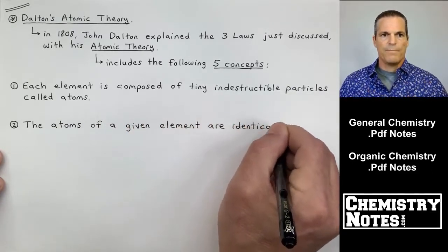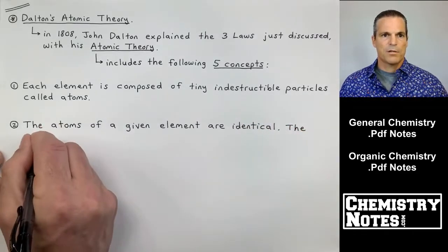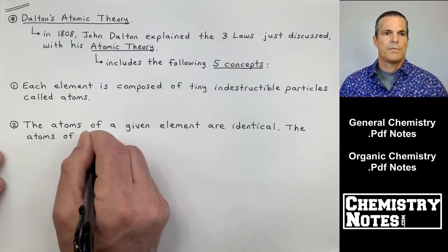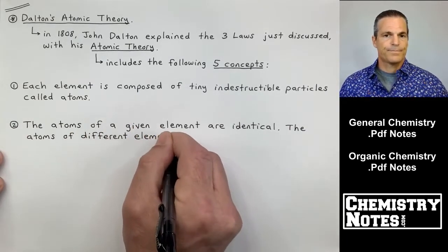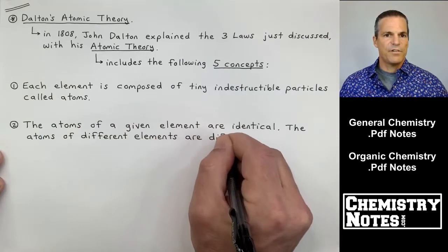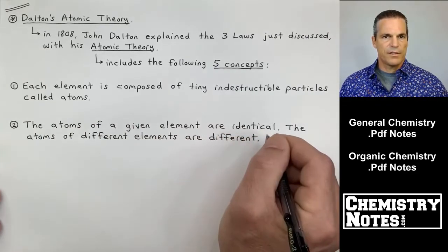So number one, each element is composed of tiny indestructible particles called atoms. Number two, the atoms of a given element are identical. The atoms of different elements are different.